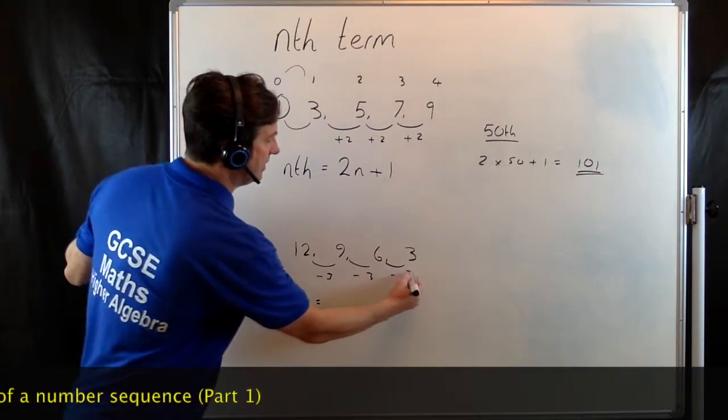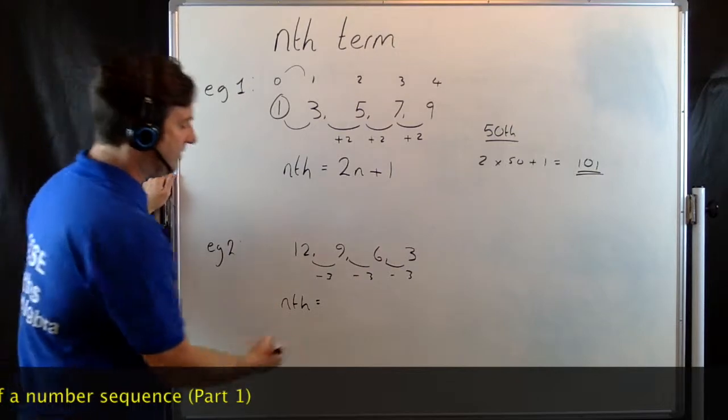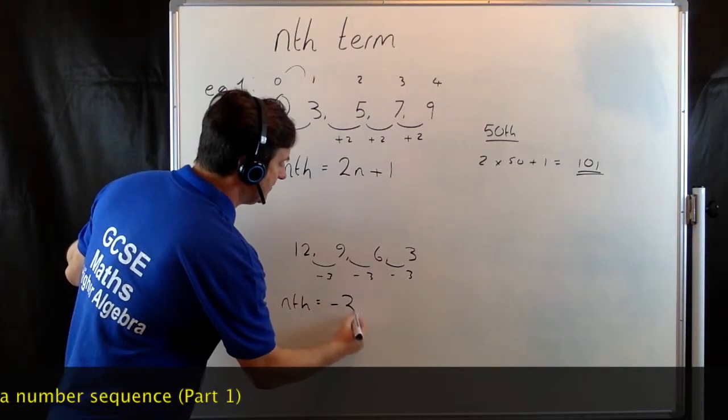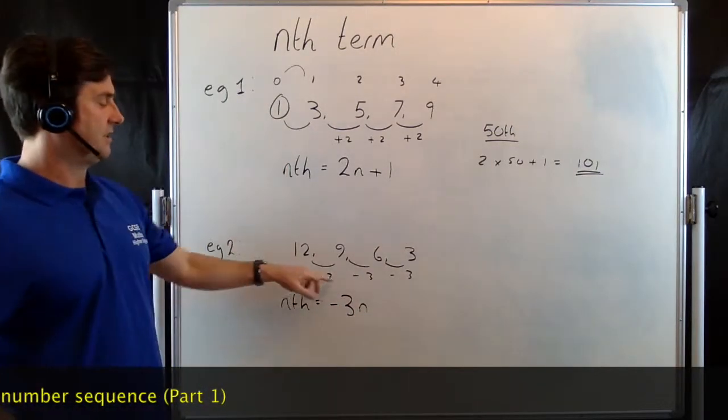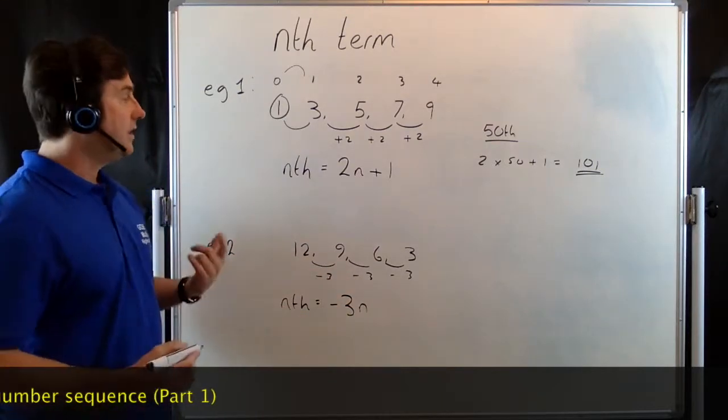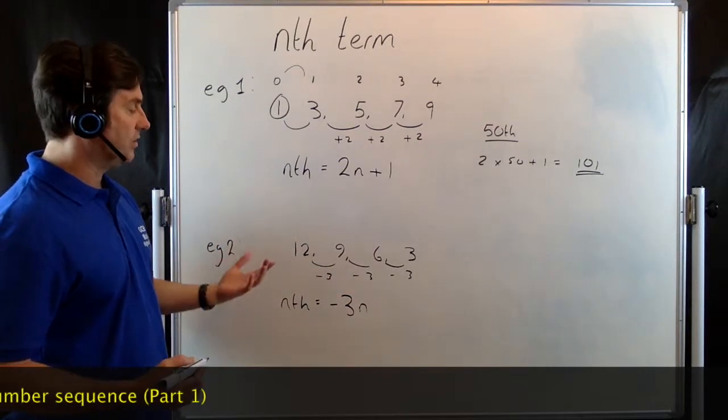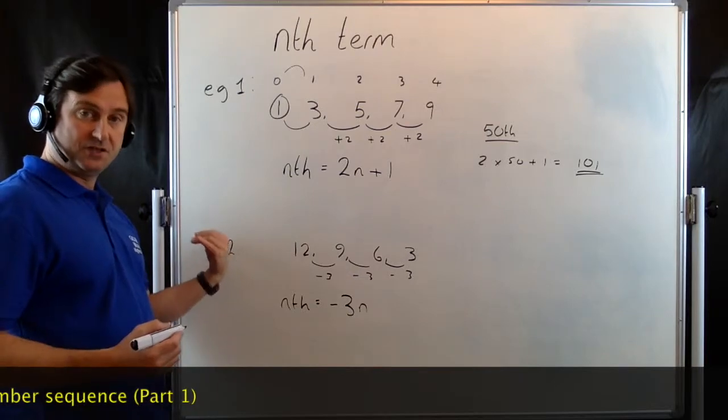You're taking away 3 each time. So our nth term becomes negative 3n. Remember, we write this number next to n. Then we've got to see what this would be at the 0 term.